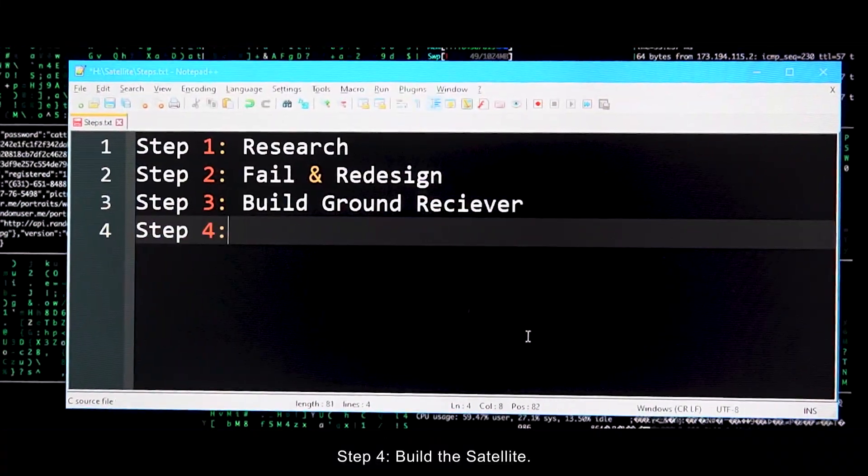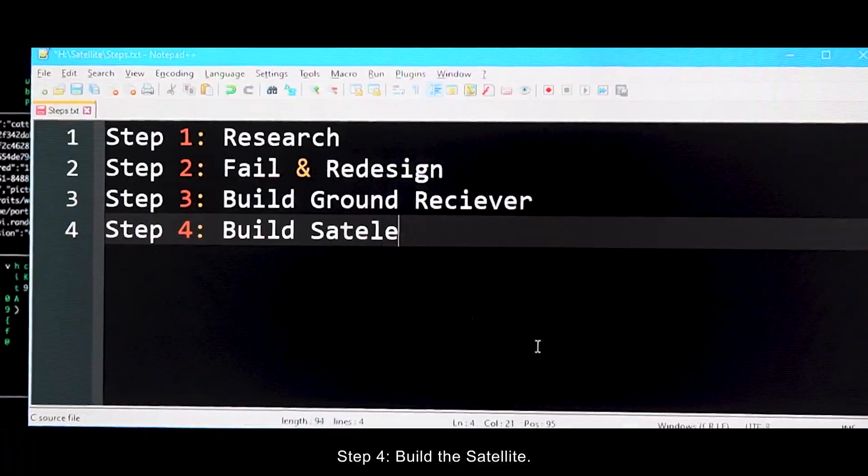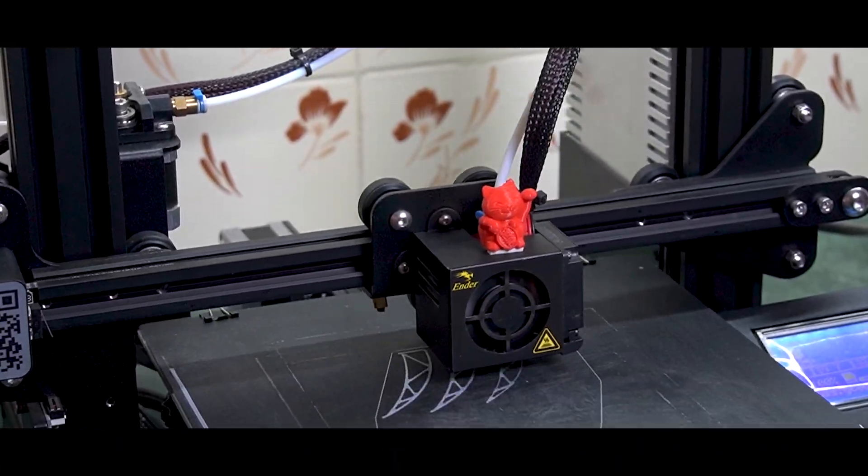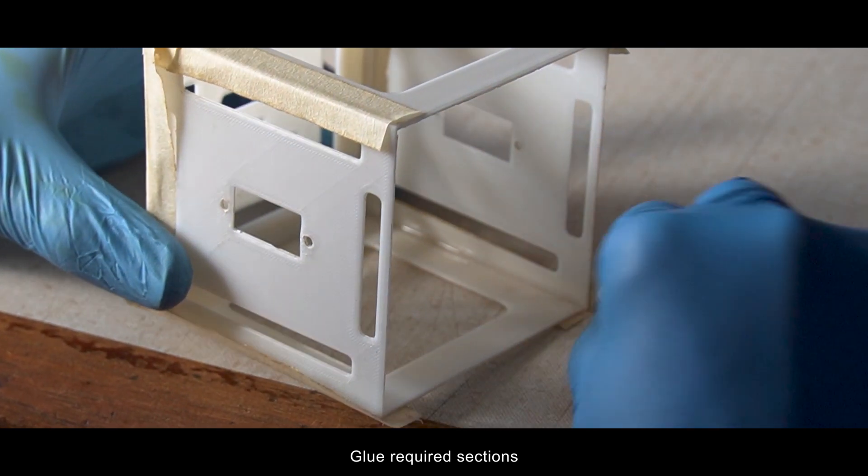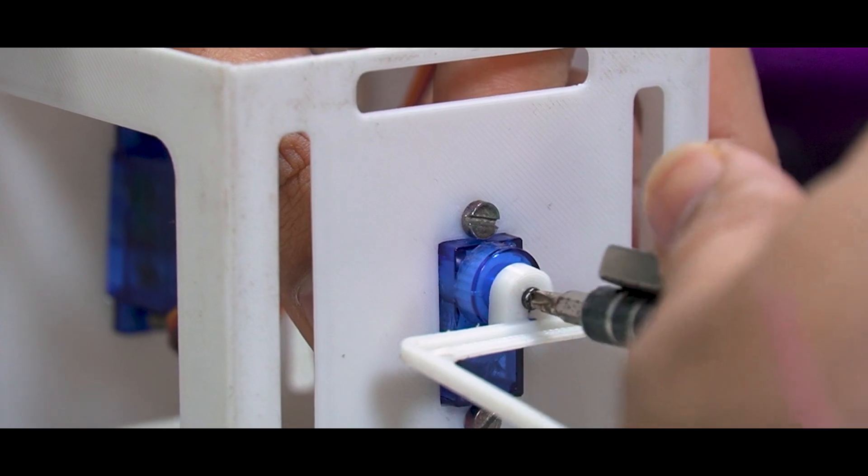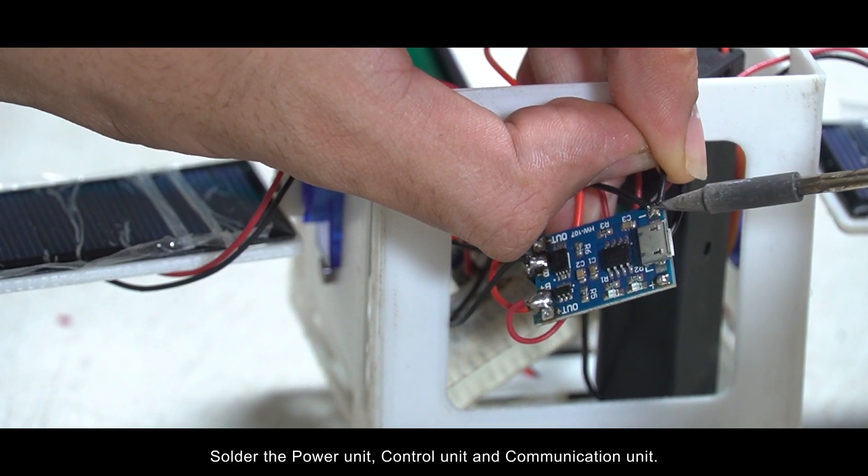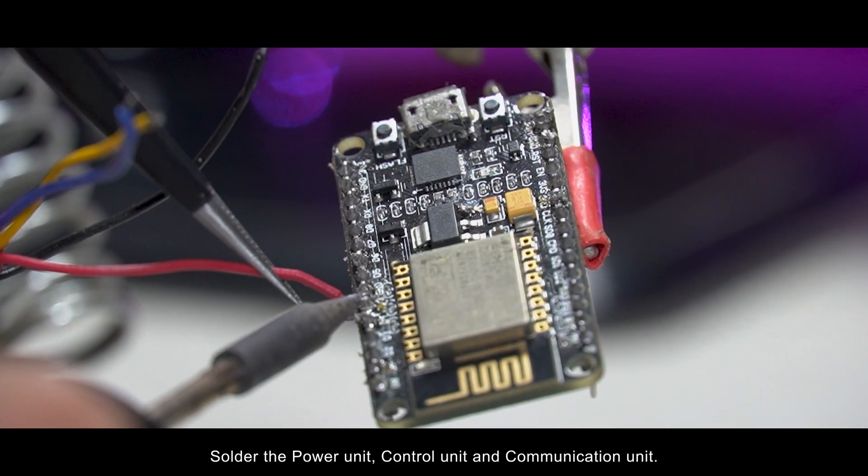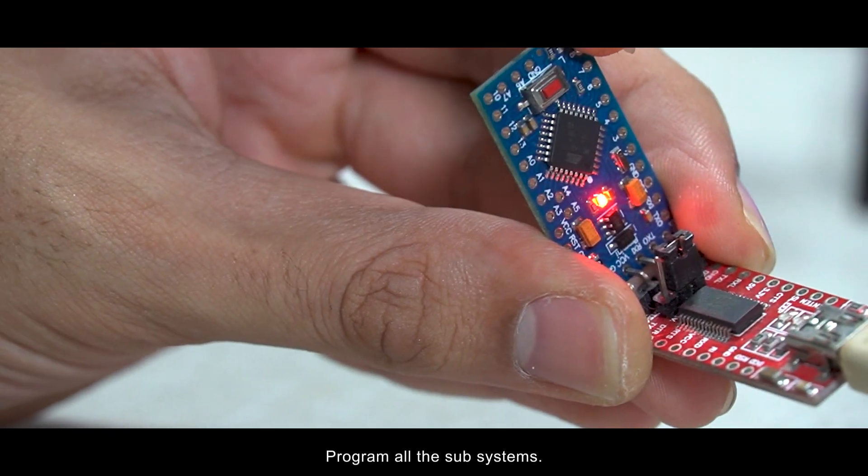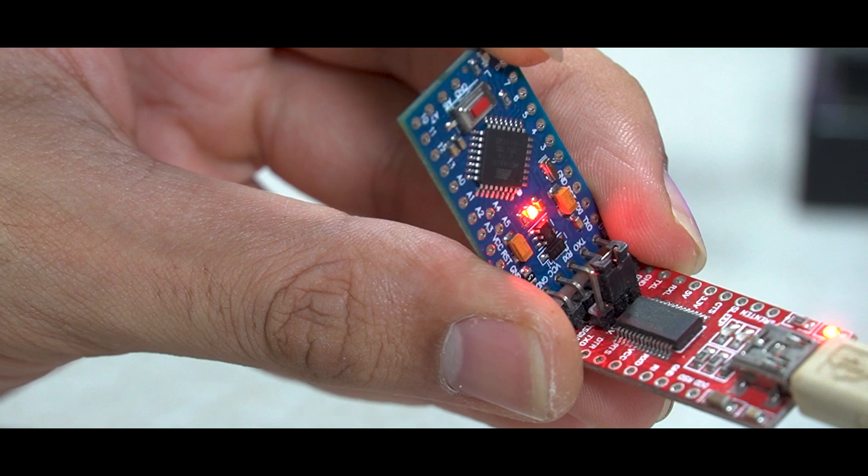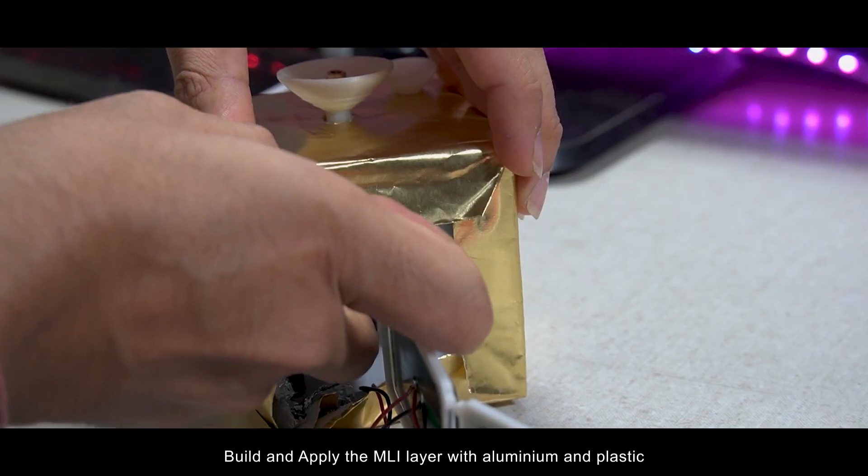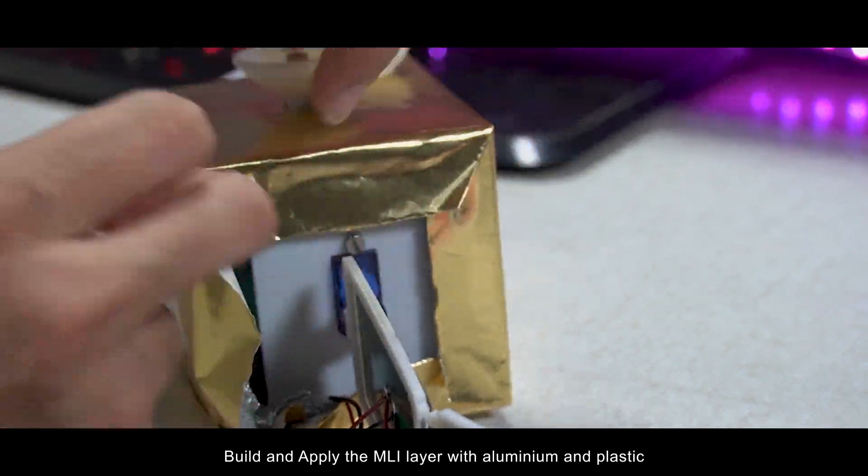Step 4: Build the satellite. Again 3D print the structure mount, glue required sections, assemble all the mechanical parts. Solder the power unit, control unit and communication unit. Program all the subsystems. Build and apply the MLI layer with aluminum and plastic.